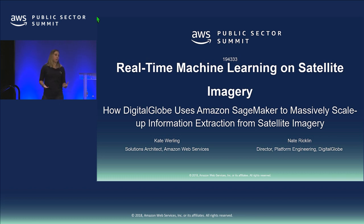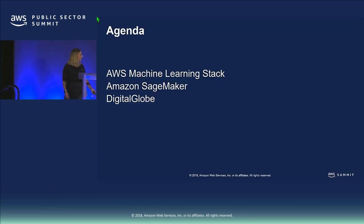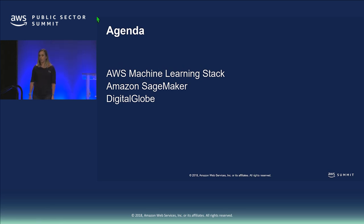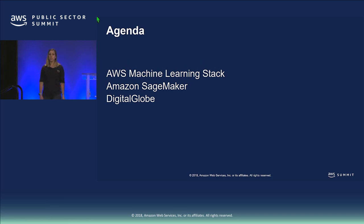That's what we're going to focus on today. I'm going to talk a lot about the AWS machine learning stack, and then we'll focus on Amazon SageMaker because Digital Globe has built out their GBDX platform, which is actually using SageMaker under the hood to allow customers to do analysis on imagery and incorporate machine learning using Digital Globe's images.